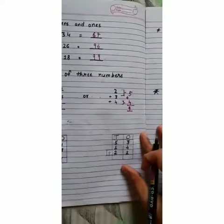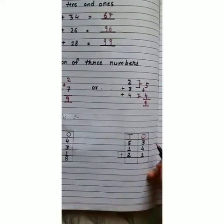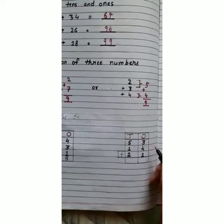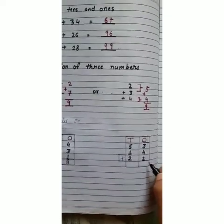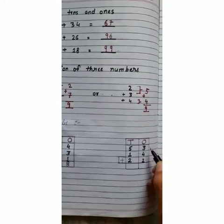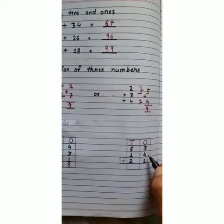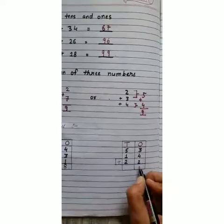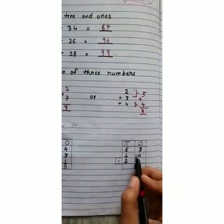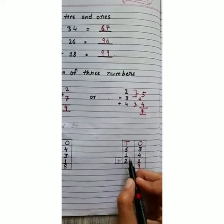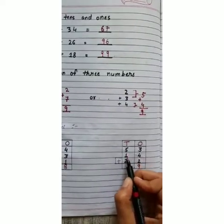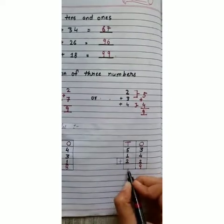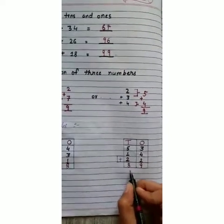Now take another example. Children, always start the sum of addition from the right-hand side, that is from one's place. Three plus four is seven, and seven plus two is nine — write nine. Then at tens place: five plus one is six, and six plus two is eight. So our answer is eighty-nine.